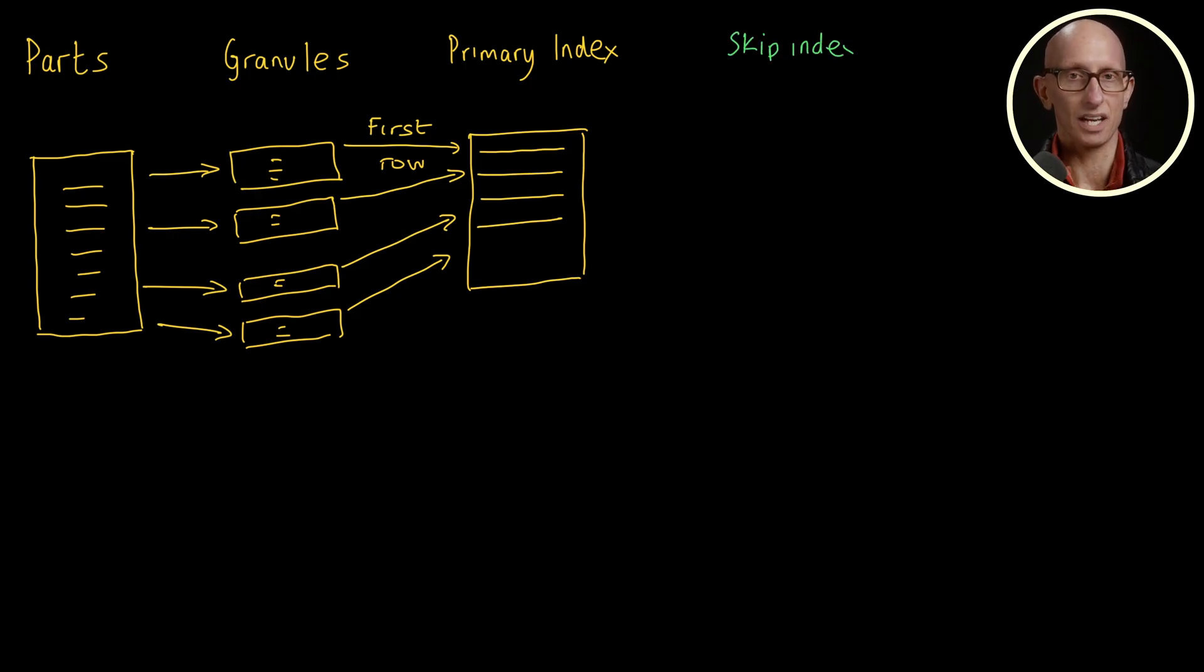The second technique is called a skipping index. ClickHouse supports min, max, and unique indexes, bloom filters, and probably more in the future. With these indexes, we again have an index file that lives in memory. When defining a skip index, we can specify a granularity which defines the size of an indexed block.